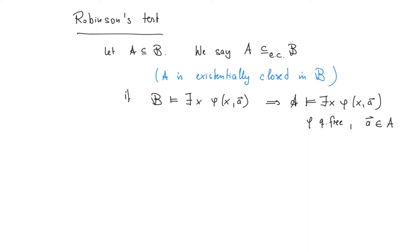For later, it will be nice to have yet a different characterization of model completeness. This is known as Robinson's test. Suppose A is a substructure of B. We say that A is existentially closed in B if the following holds: whenever B satisfies the formula that there exists x such that phi(x, a), where a is a tuple from the smaller structure and phi is a quantifier-free formula — so whenever we can make an existential formula true with parameters from the smallest structure — this formula is also true in the smallest structure.